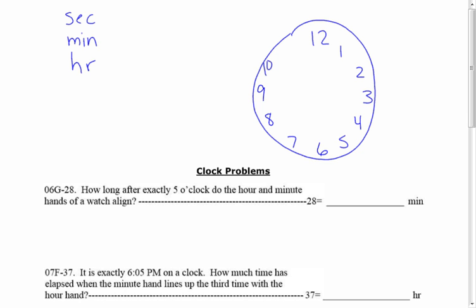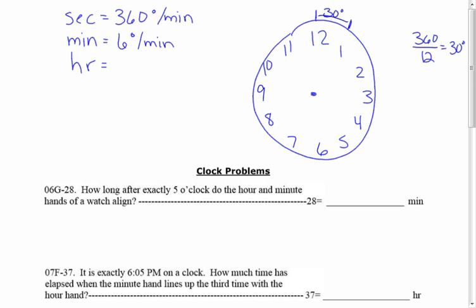We're going to put all of these rates in terms of degrees per minute. The second hand goes all the way around the clock in one minute, so its rate is 360 degrees per minute. There are 12 segments in the whole circle, so 360 divided by 12 gives 30 degrees per segment. In one minute, the minute hand moves one of those little sections — there are five minutes between each one — so it travels 6 degrees per minute. You can also get this by taking 360 degrees divided by 60 minutes.